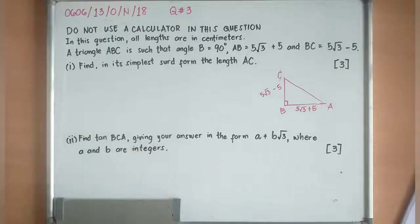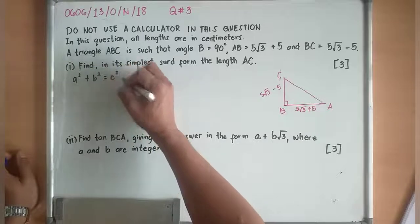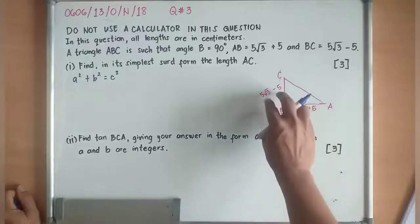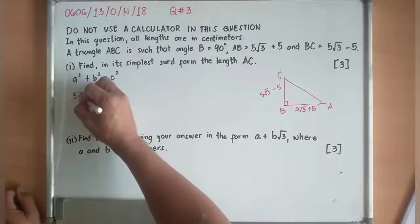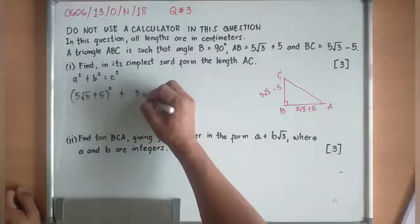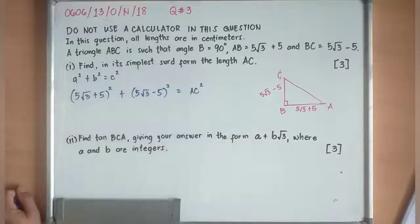For the first question, you need to look for the length AC in simplest surd form. If you will notice, this is a right triangle, so I can apply A² + B² = C², which is our Pythagoras theorem. So I am just basically squaring the first and the second. It will become (5√3 + 5)² + (5√3 - 5)² = AC².